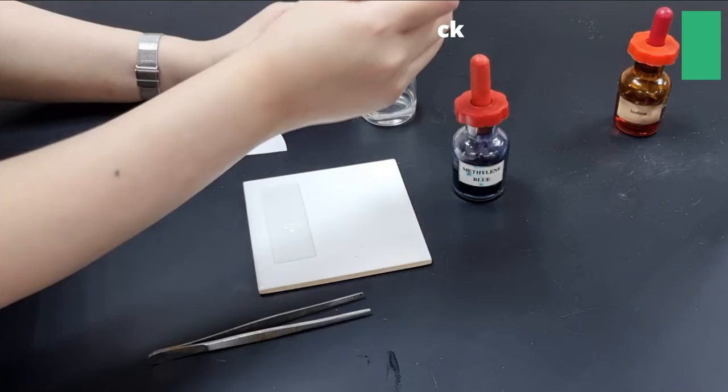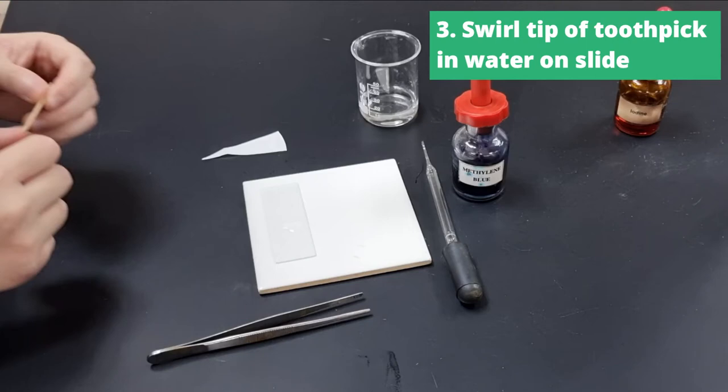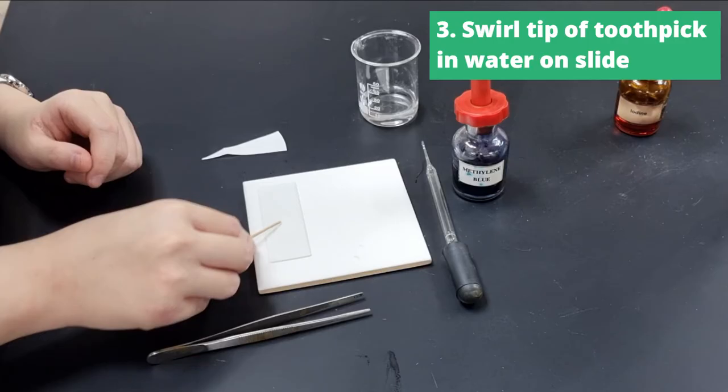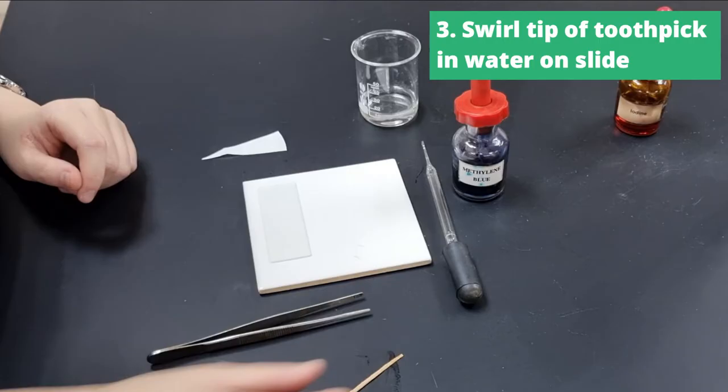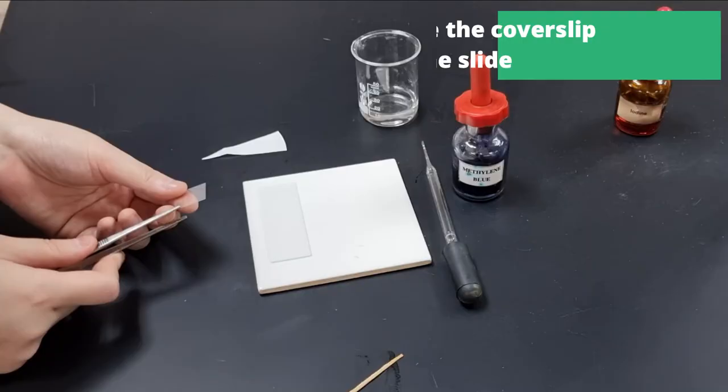And then we're going to take the toothpick you just used to scrape your cheek cells and put the tip in, stir it a little bit. Try and get those cheek cells into the water. Don't stir it too much though, because this will fragment the cells. You don't want that to happen. Just make sure the cheek cells are in your water.